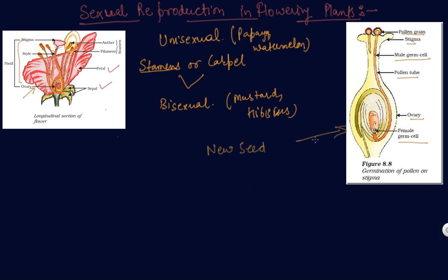The new seed is developed here. The ovary grows rapidly and ripens to form a fruit. Meanwhile, the petals, sepals, stamens, and stigma may fall off. This is how, and this is also known as germination, the process of sexual reproduction in flowers.